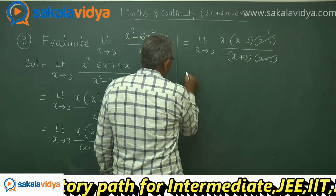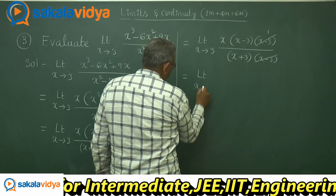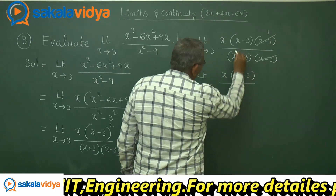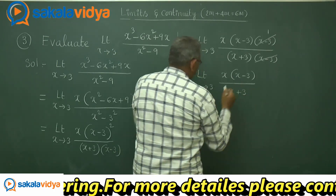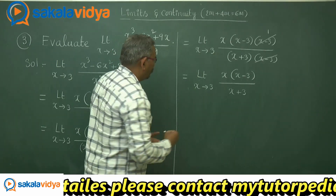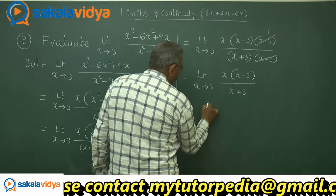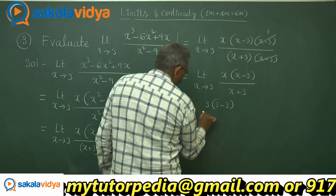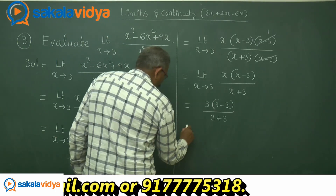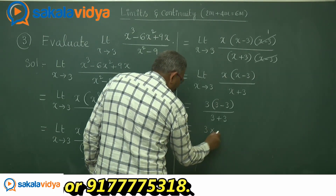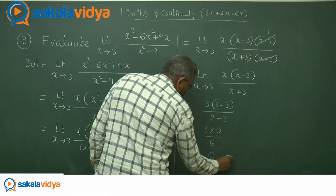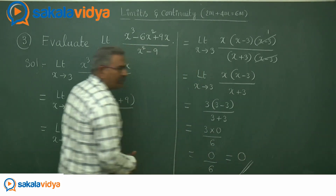After cancellation we have: limit x tends to 3 of x(x - 3) upon (x + 3). Now substituting x = 3 directly: 3 times (3 - 3) upon (3 + 3) = 3 times 0 upon 6 = 0/6 = 0. So the limit of the function is 0.